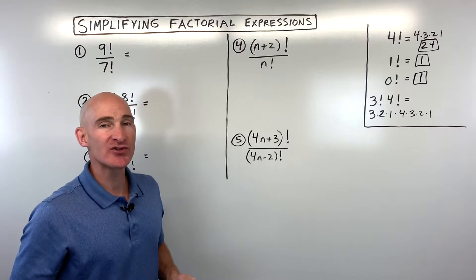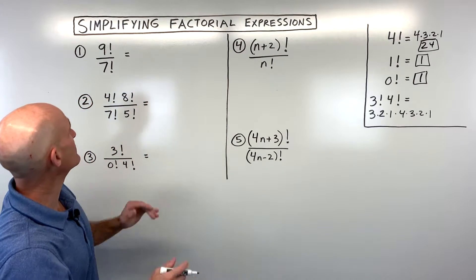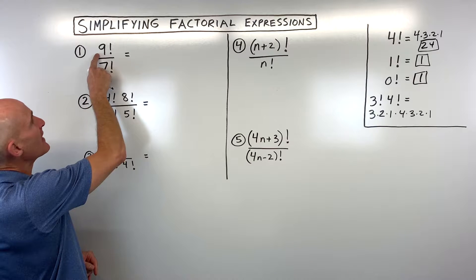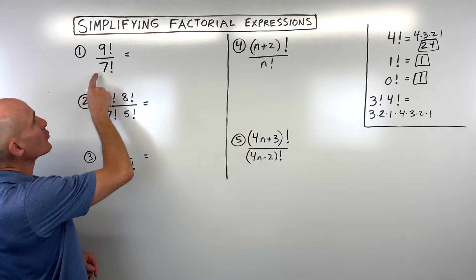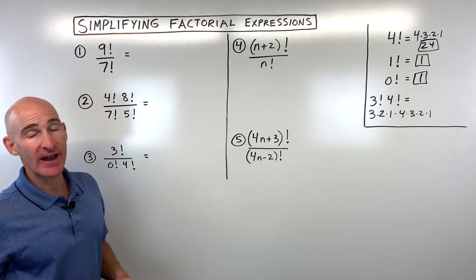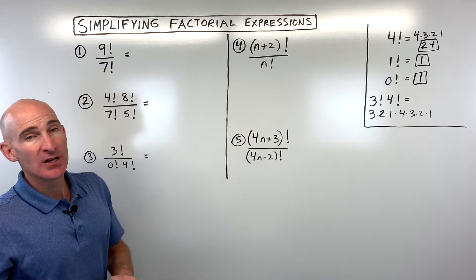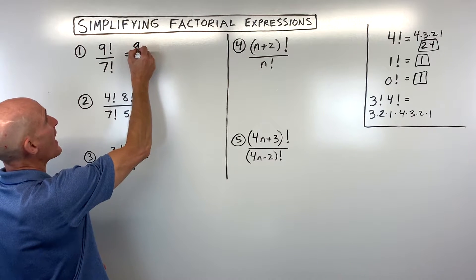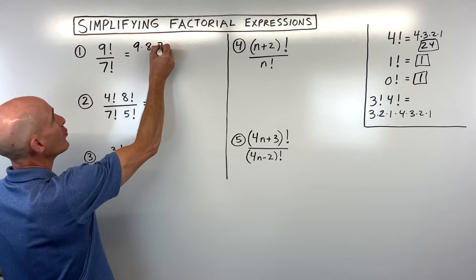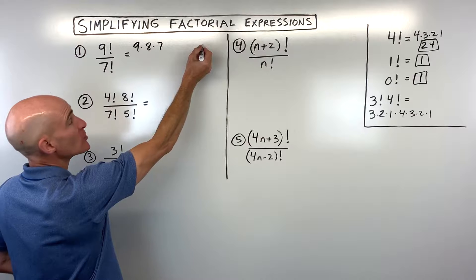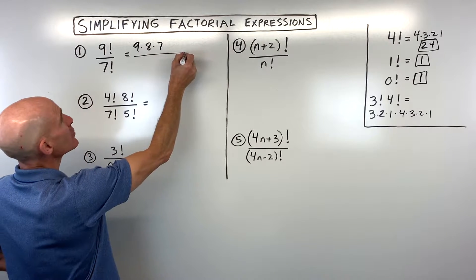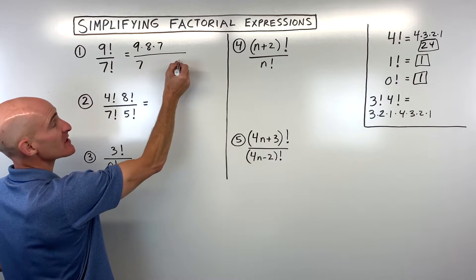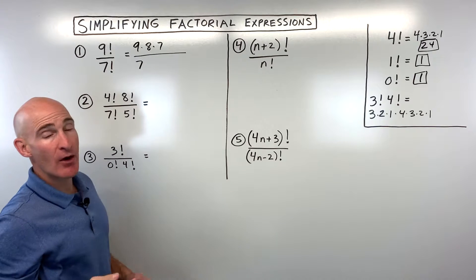Let's start with example number one. If you want to test yourself, pause the video and try some of these. We've got nine factorial divided by seven factorial. One option is you can start at nine and multiply all the way down to one. Same thing with the seven — seven factorial is seven times six times five all the way down to one.